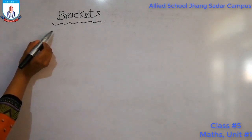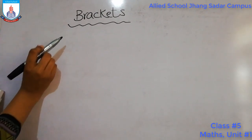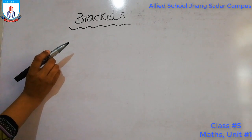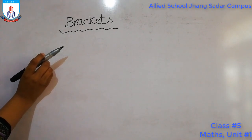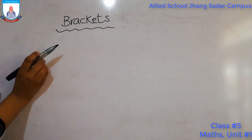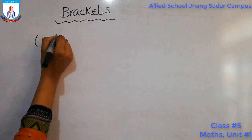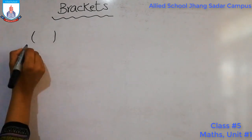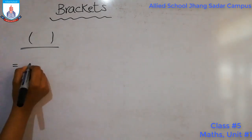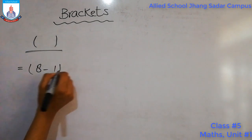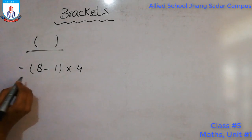Students, now we will learn about brackets. Brackets help us to solve problems involving two or more operations by telling us which part to simplify first, by grouping some numbers together. Therefore brackets are also called grouping symbols. The most common brackets used in Maths are the round brackets and curly brackets.